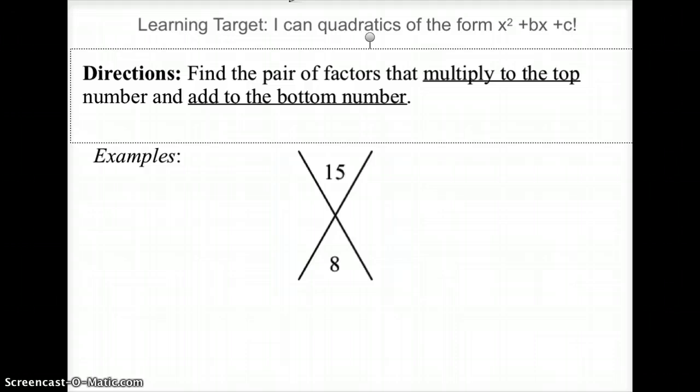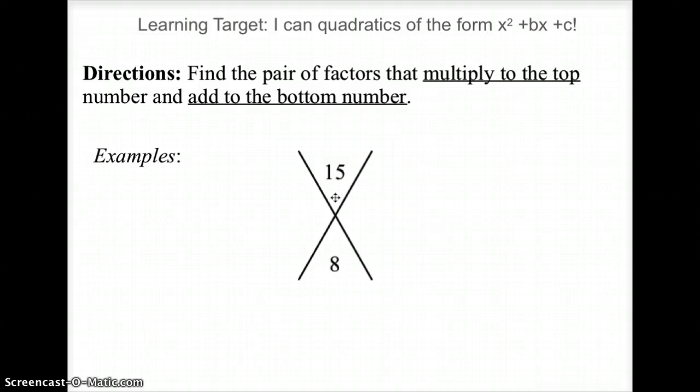But before we get started actually factoring, let's try some puzzles. So I've got this x puzzle, and it says find the pair of factors that multiply to the top number and add to the bottom. So what numbers would multiply to 15 and add to 8? So off to the side, maybe you want to think about the pairs that multiply to 15. 1 and 15, 3 and 5. Is there any way I can get an 8 out of any pair of these numbers? Yeah, 3 and 5, if I add them, I would get an 8. So that would finish my puzzle.